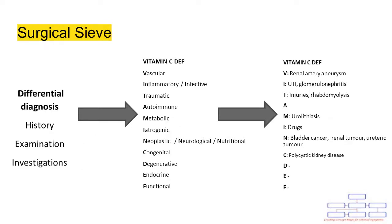Here we can see we've populated some of these categories with differential diagnoses. We've got vascular causes, including renal artery aneurysms. We have inflammatory and infective causes, including UTIs and glomerulonephritis. We have traumatic causes, including injuries and rhabdomyolysis. We have metabolic causes, including urolithiasis. We have iatrogenic causes, including drugs. Neoplastic causes include bladder tumour, renal tumour, and ureteric tumour. And then we have congenital causes, such as polycystic kidney disease.